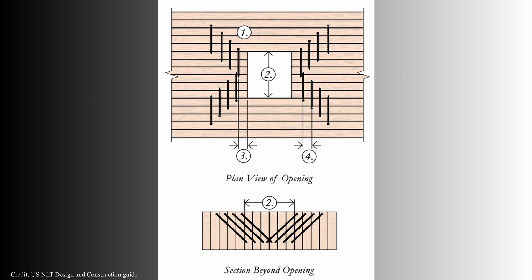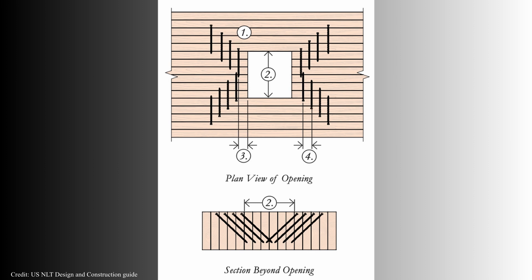Then you can go to the next step, which is structural steel angles, and then really the last step is supplemental reinforcing — say, additional beams dropped below the panels. So there are definitely options out there, but they vary depending on the panel system you're using and the size of the opening.